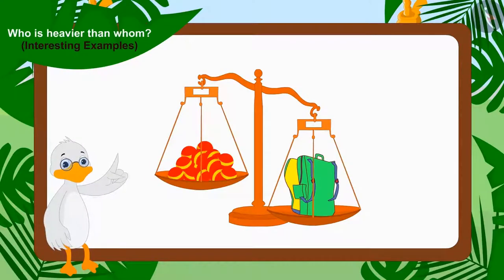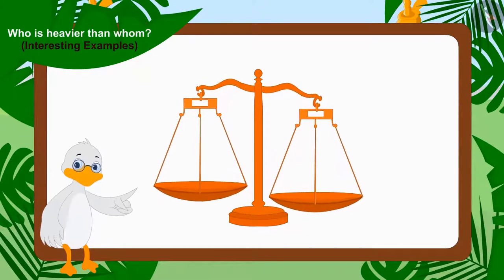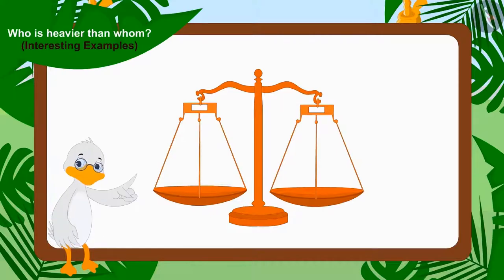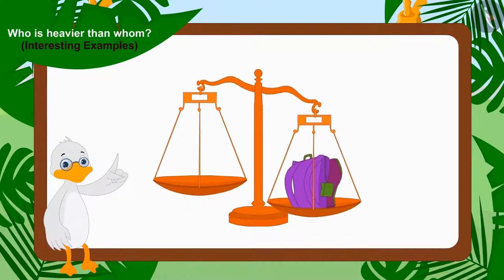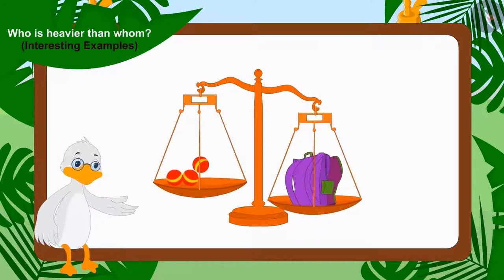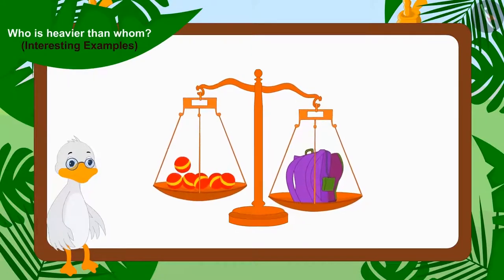Now, Uncle took Sher Khan's bag from the scales and also removed the balls. Now, on one side of the scales, Uncle kept Bhola's bag and on the other side started placing the balls one by one.